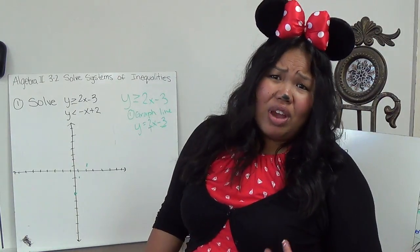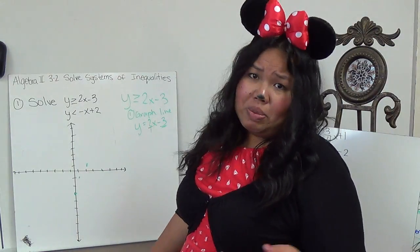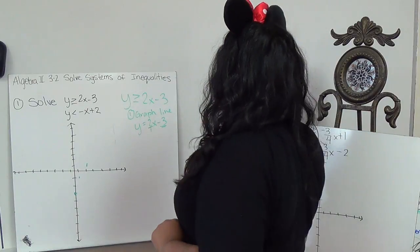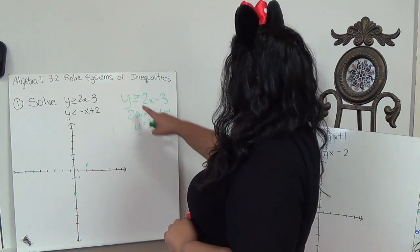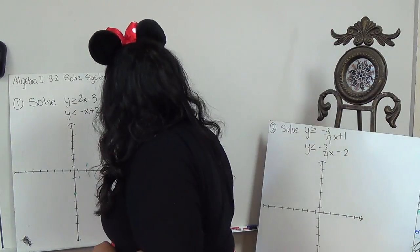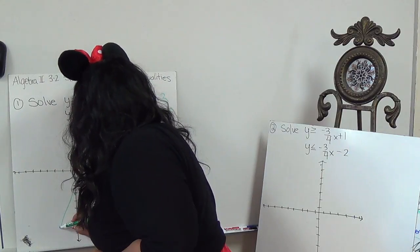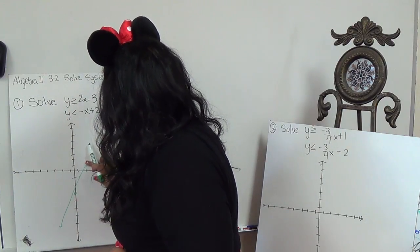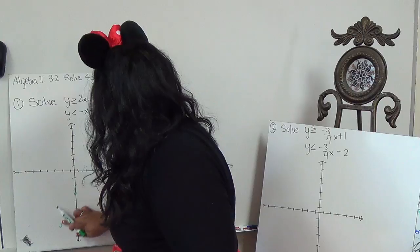And again, I didn't draw these graphs perfect. So it might be better if you draw it on a graph paper. But because this has a line underneath, we're dealing with a solid line.